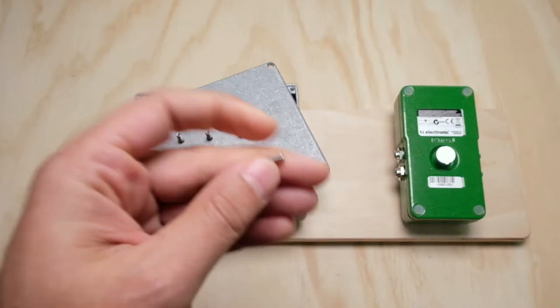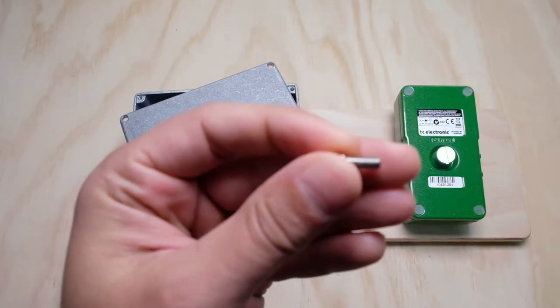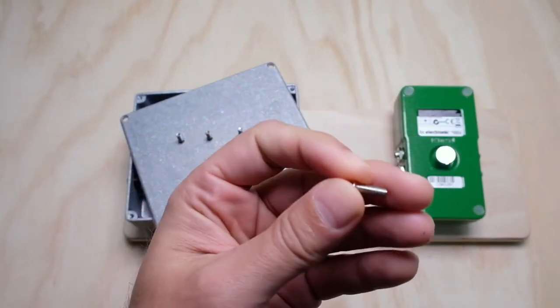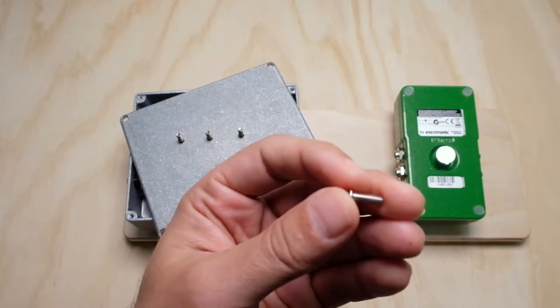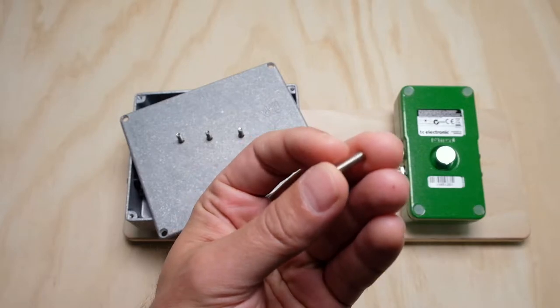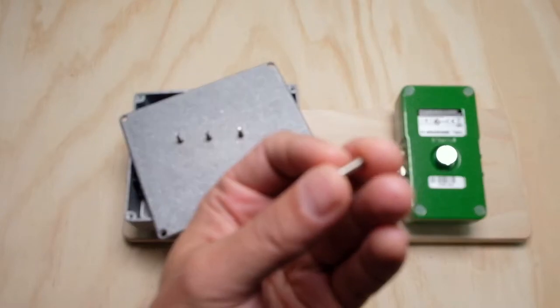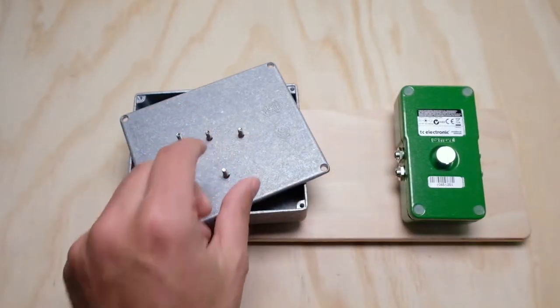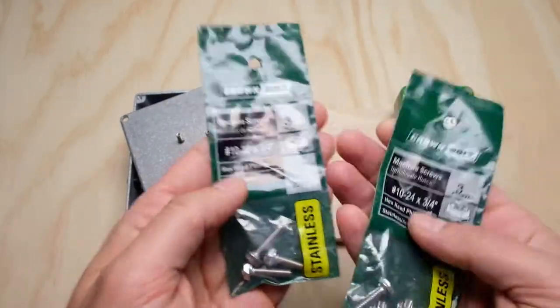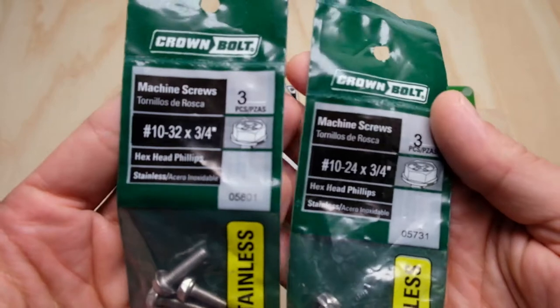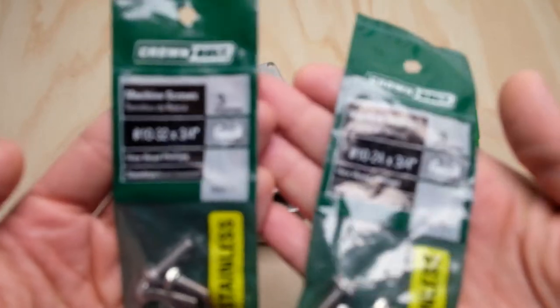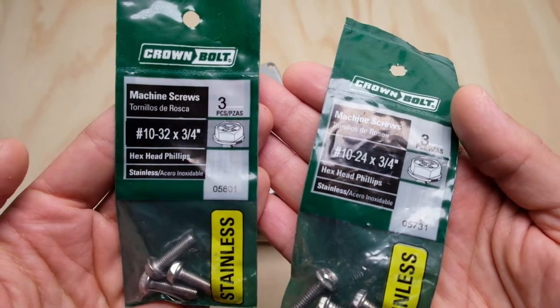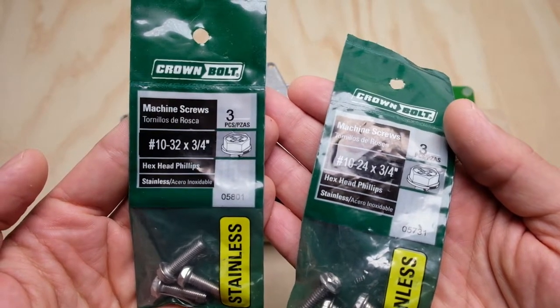The second measurement is going to be the thread pitch, which is how far apart or how many threads there actually are on the bolt. For imperial, it's going to just be a number and that number is going to represent how many threads per inch there are on the bolt. For metric, it's going to be a number which tells you how far apart the individual threads are on the bolt. Now here on these number 10s, you can see I have a 24 and a 32. The 24 is the coarse version, 24 threads per inch, and a 32 is the fine version, which has 32 threads per inch.